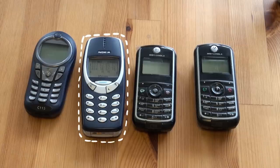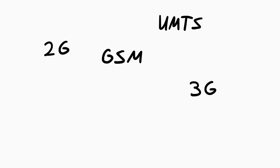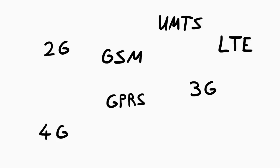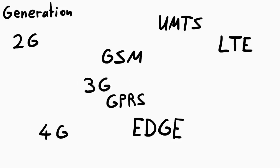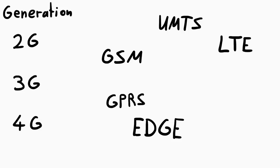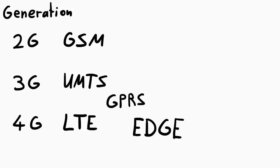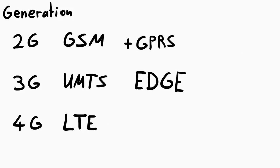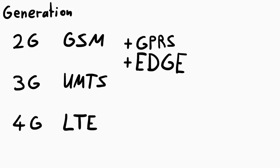Before we look at the first phone, I want to get everybody on track when it comes to the different telecommunications technologies. You have definitely heard the terms 2G, 3G, UMTS, GSM, LTE, GPRS, 4G, EDGE and maybe more. The G's stand for generations — 2nd, 3rd and 4th generation — and they are basically the PR names for GSM, UMTS and LTE. GPRS, EDGE and loads of other terms are extensions that added something to those bigger standards.